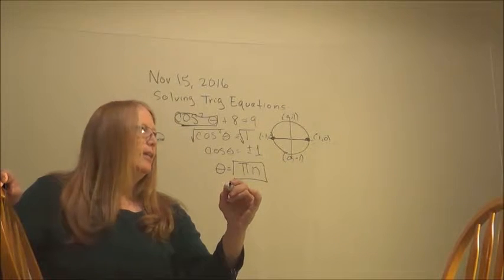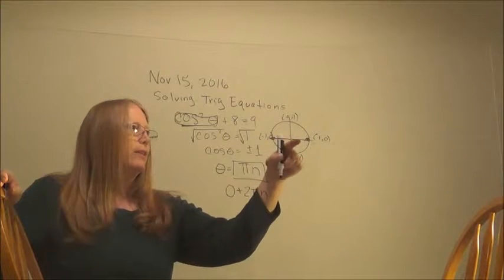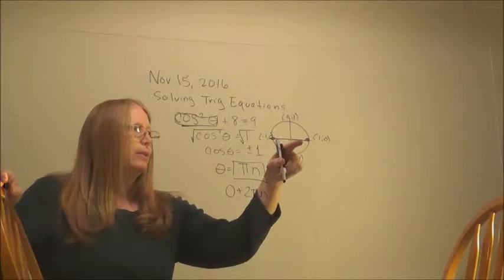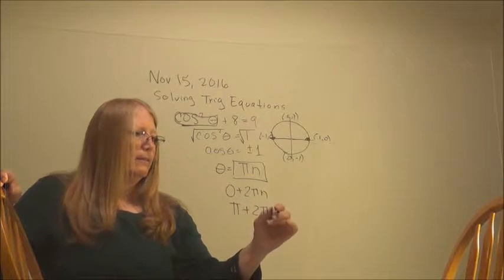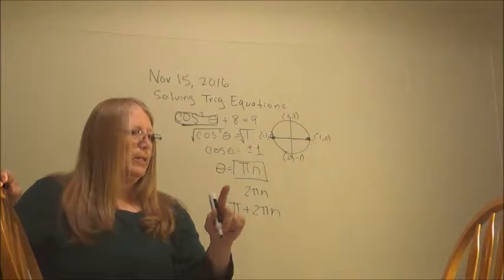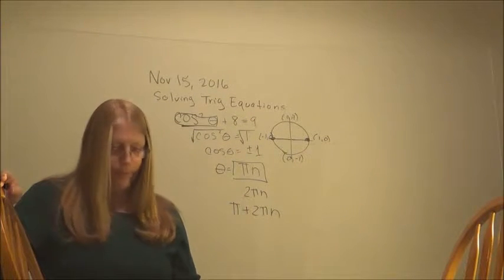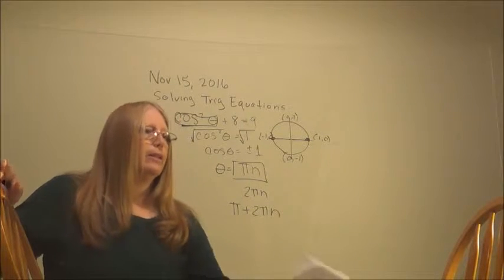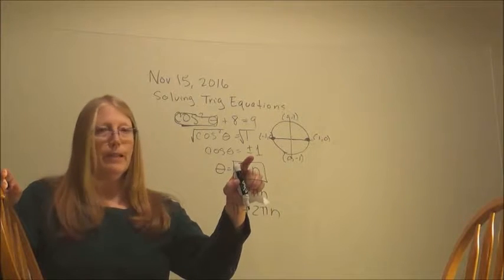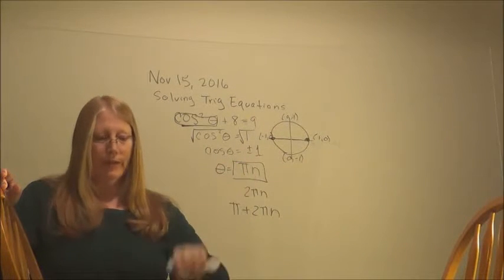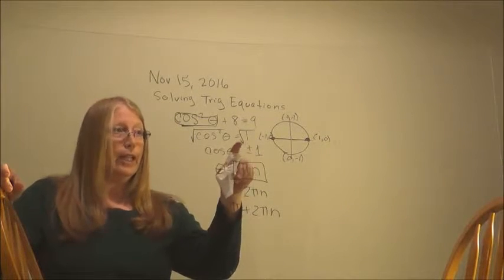So theta equals pi n. If you're not comfortable with that, you can write 0 plus 2 pi n. That means you're starting here and going around one whole circle. And then doing pi plus 2 pi n. So we don't need the 0. But these two answers are the same as that one answer.